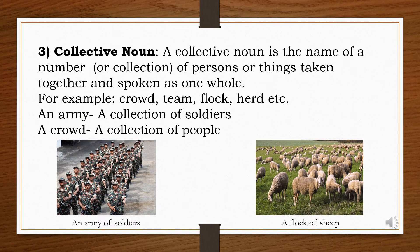The next kind of noun is the collective noun. A collective noun is the name of a number or collection of persons or things taken together and spoken as one whole. In simple terms, the name given to a group of persons or things is a collective noun. Examples: crowd, team, flock, herd. For instance, an army is a collection of soldiers — army is a collective noun. A crowd means a collection of people, so crowd is a collective noun.